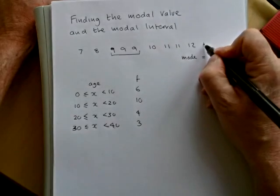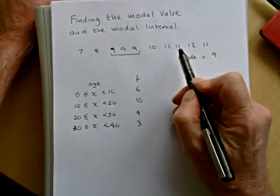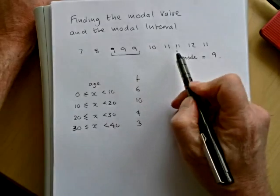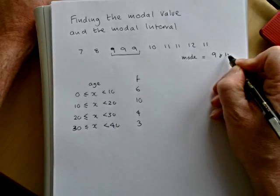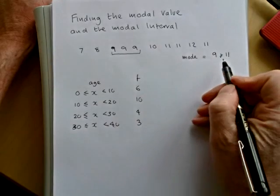If we say had another eleven, and you saw that there are three nines and three elevens, then you'd have two modes, you'd have nine and eleven. So it's possible to have more than one.